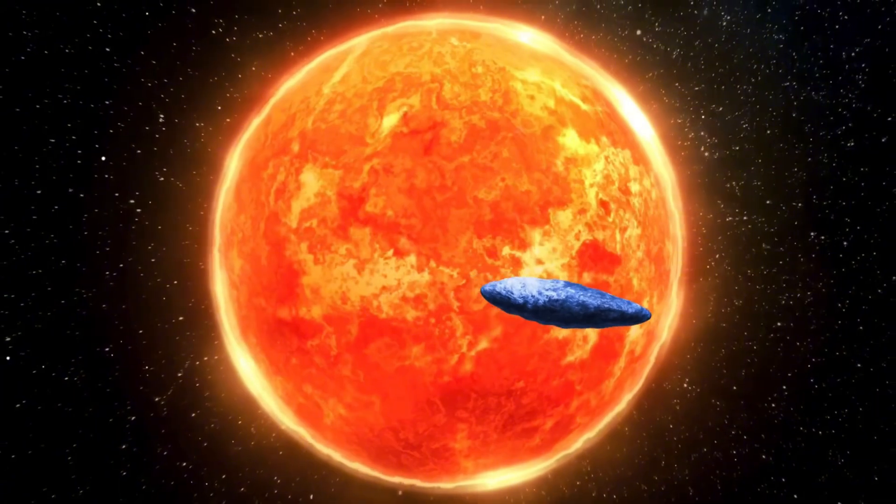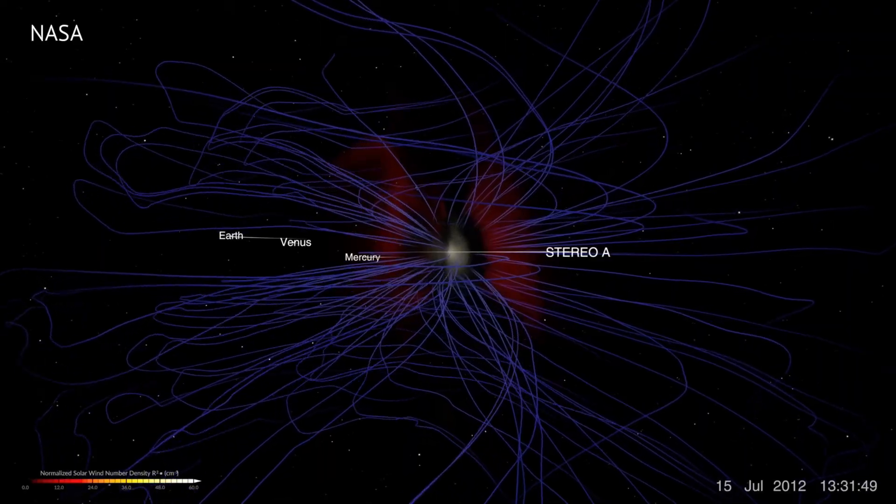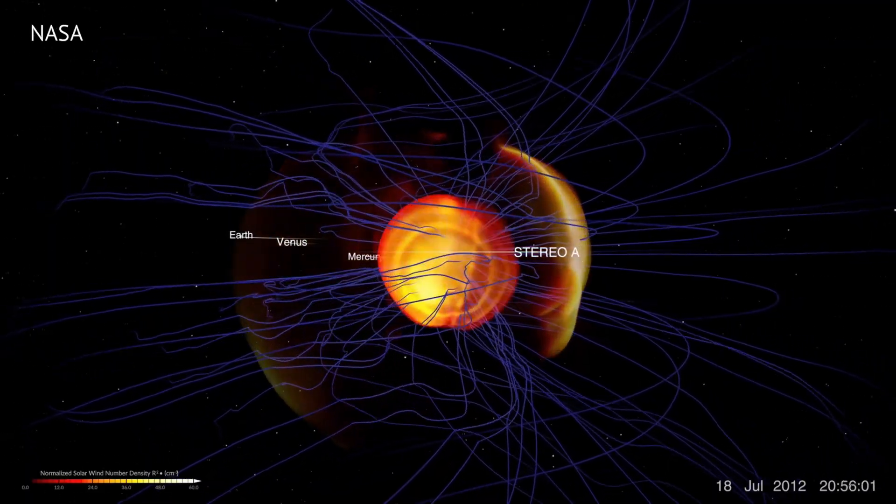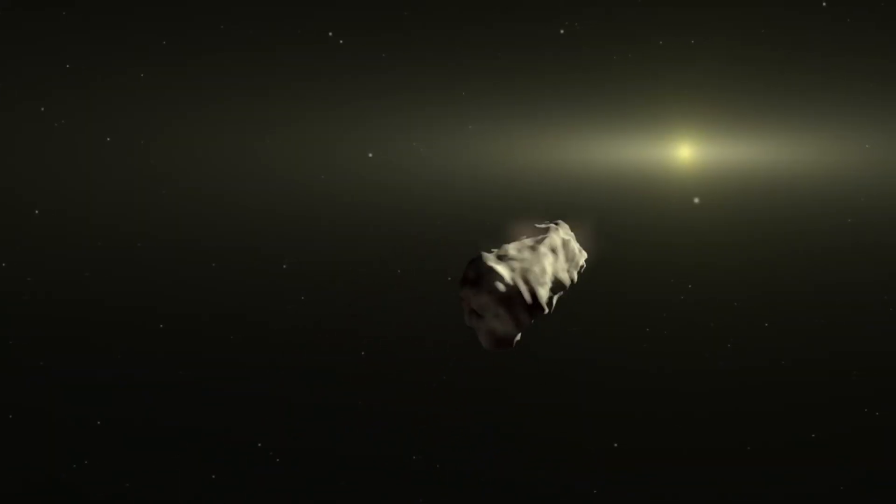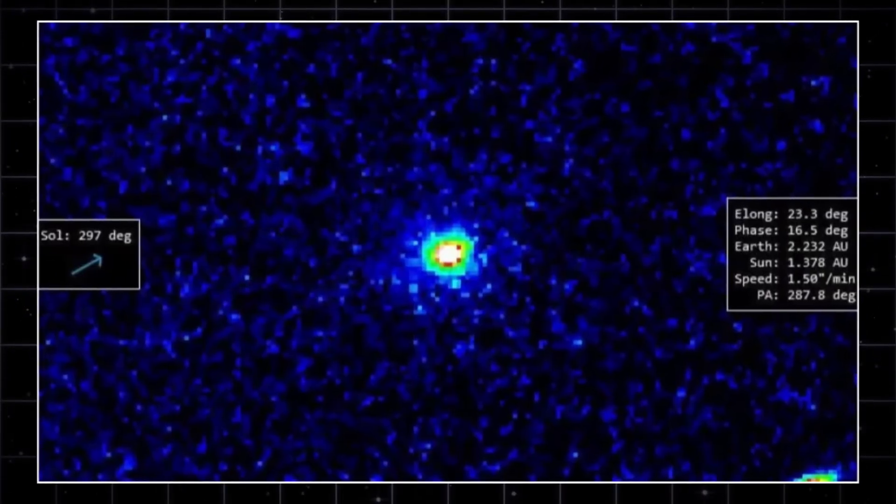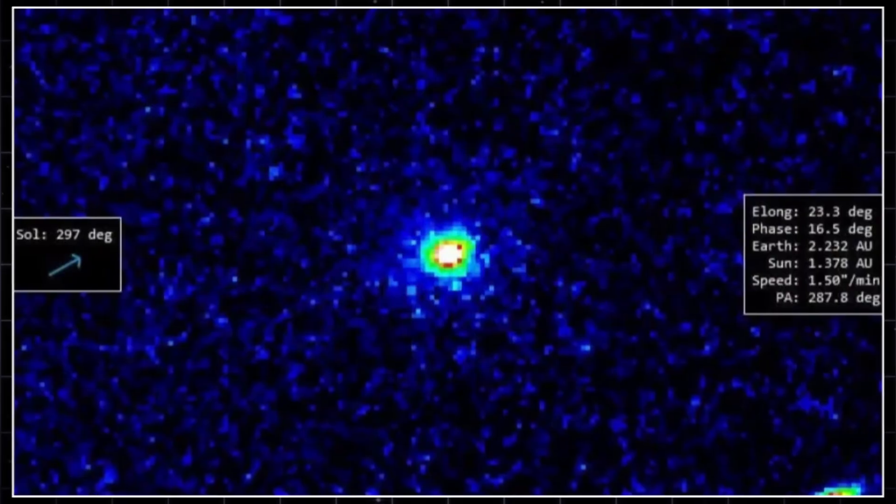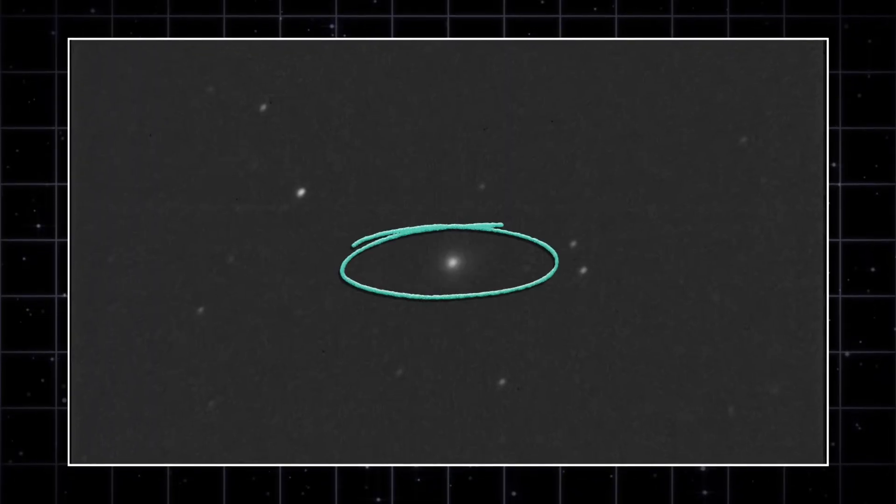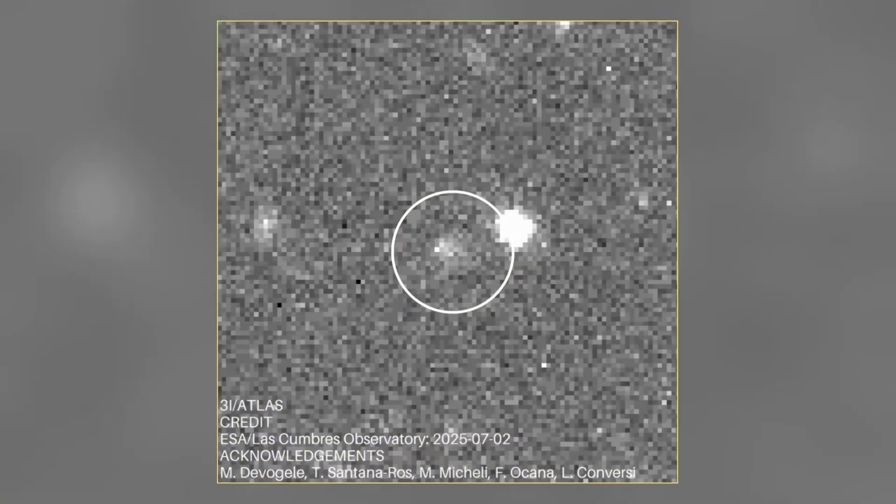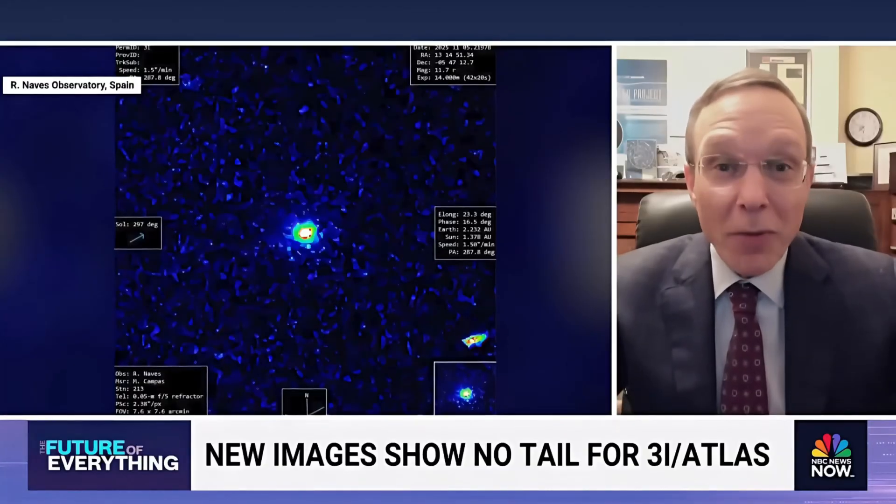An ion tail doesn't just appear, it's created. Here's what's happening inside that photograph. As 3I Atlas moves through the inner solar system, the sun's heat penetrates its surface. Frozen gases like carbon dioxide, water ice, and other volatile materials begin to sublimate, turning directly from solid to gas.